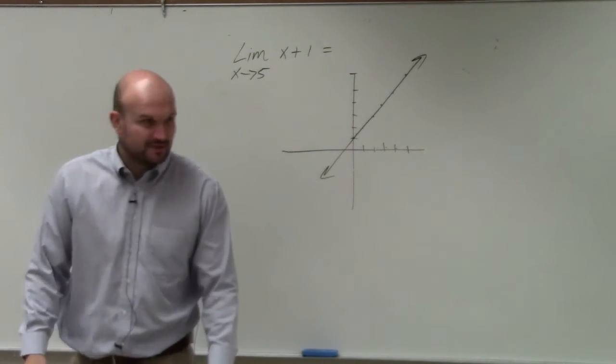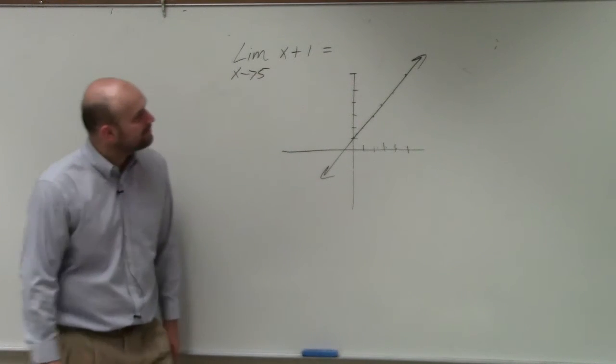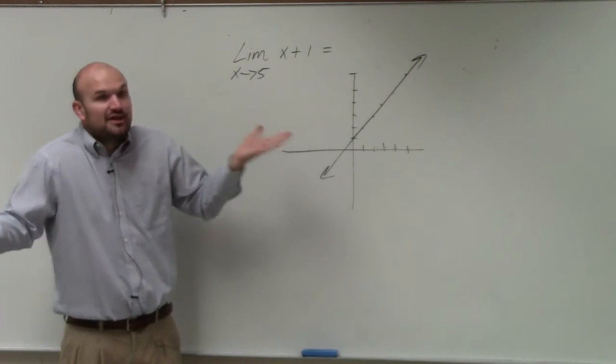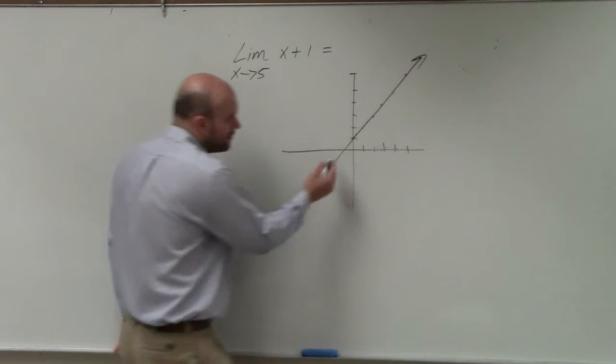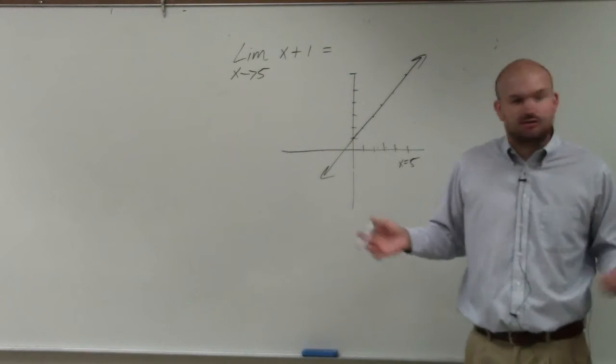You guys see that? You agree that's what that graph would look like, right? I've been practicing graphing linear equations for a while. Okay, so what we're looking for is what is the value of this function as x approaches 5? Well, we go over to when x equals 5, which is right here, and we say what is the value of the function?